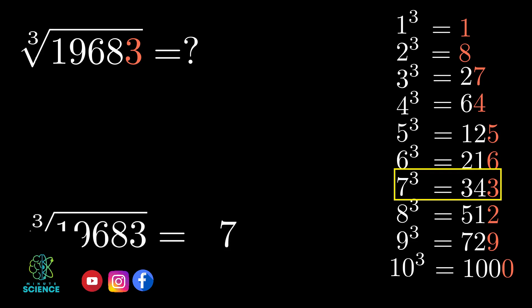For finding the remaining digit of the answer, we need to divide the number into two parts. In the problem, the number is 19683.